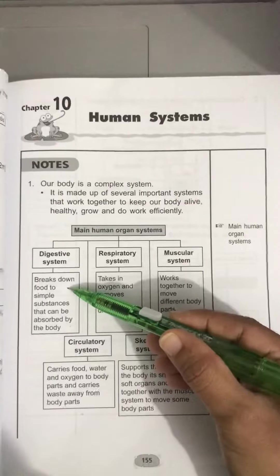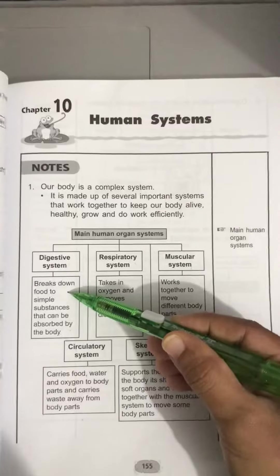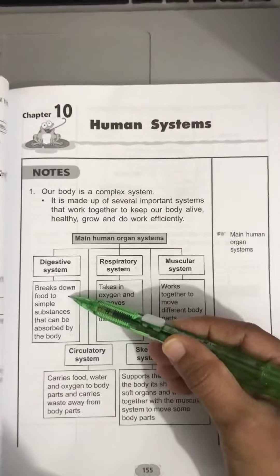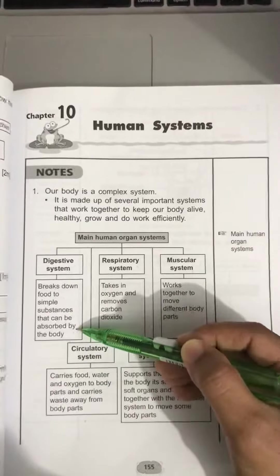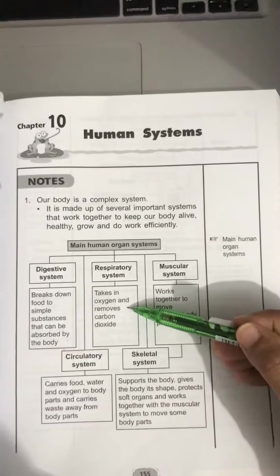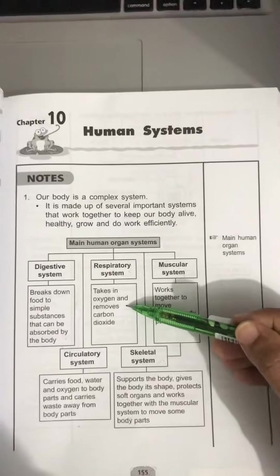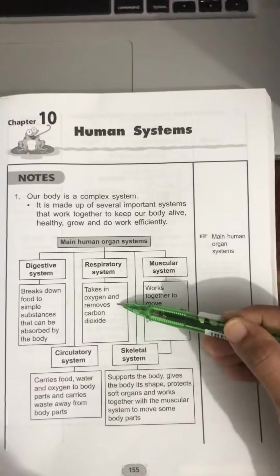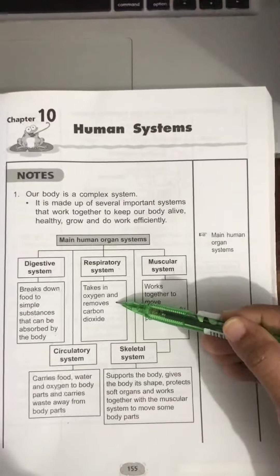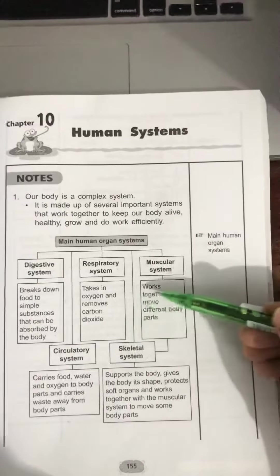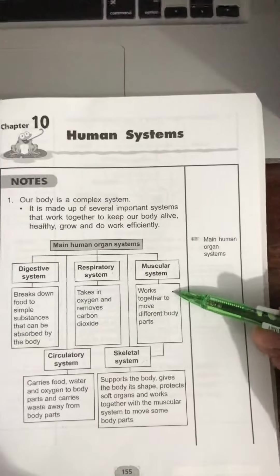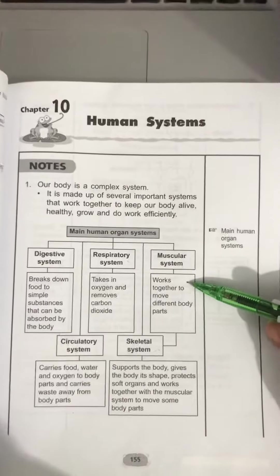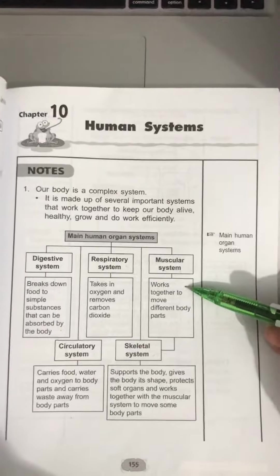The function of the digestive system is to break down food into simple substances that can be absorbed by the body. The function of the respiratory system is to take in oxygen and remove carbon dioxide.